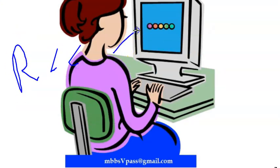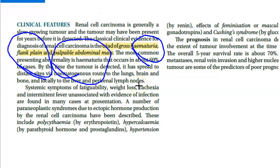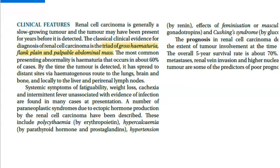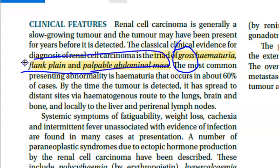Moving on to clinical features: patients will present with hematuria, flank pain, and palpable abdominal mass - this is the classic triad of renal cell carcinoma. Gross hematuria is the most common presenting abnormality. Flank pain is pain by the side of the abdomen.